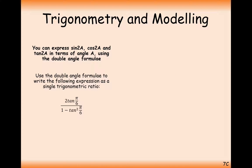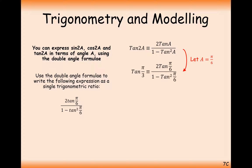In radians mode: 2 tan(π/6) over 1 minus tan squared(π/6). This looks like the tan 2a formula, so set a equal to π/6, and we get tan(π/3) as our simplified trigonometric ratio.